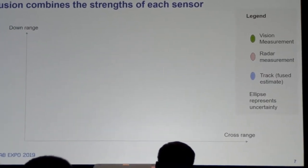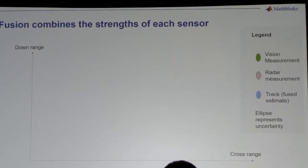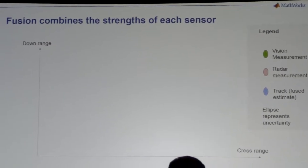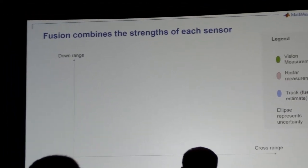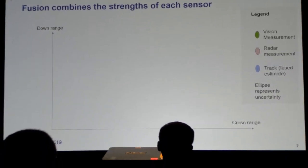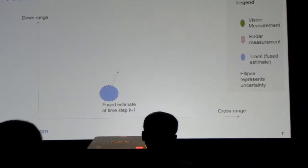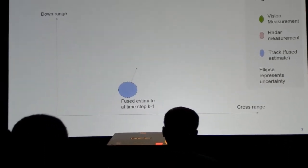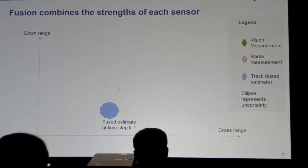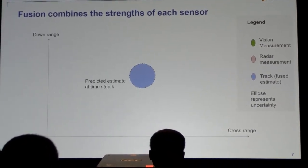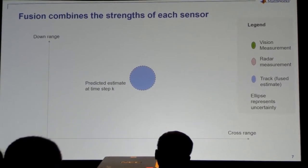Let's look at a simple example. What do we mean by sensor fusion? For fusion, we're really talking about the idea of taking sensor measurements and combining the strengths of those measurements to get an answer that will be better than if we look at any individual sensor. Let's look at it from a camera and radar standpoint.